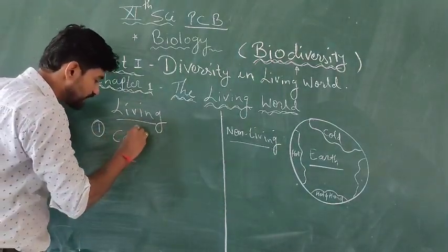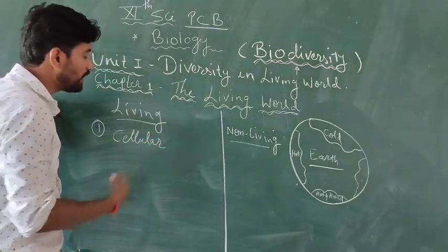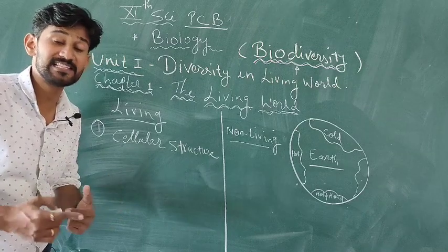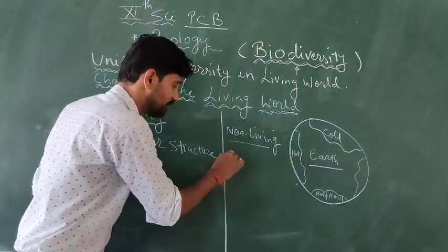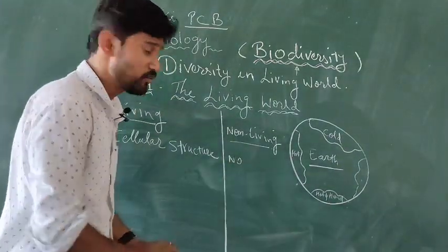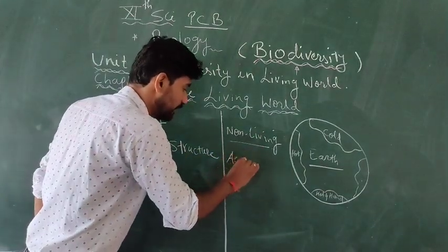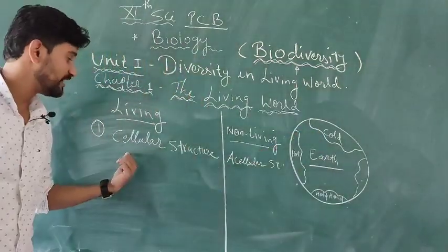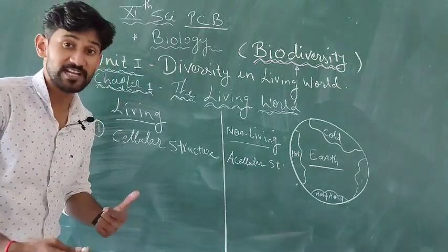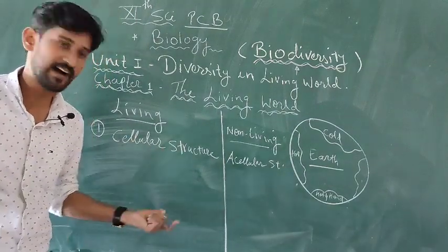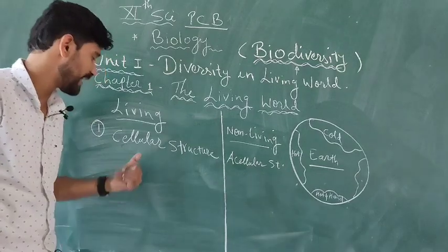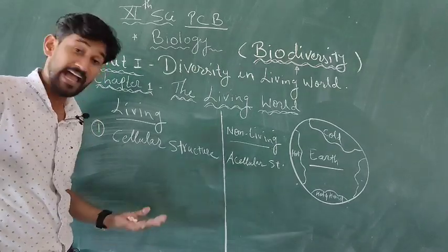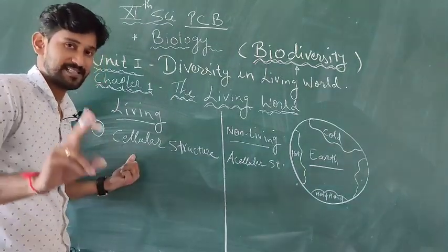The first definitive property is cellular structure. All living organisms basically consist of a cellular structure - every living organism has a cell. Non-living organisms have an acellular structure, meaning no cells are present. Living organisms have either prokaryotic cells or eukaryotic cells. In Kingdom Monera, like archaea bacteria and cyanobacteria, they have prokaryotic cells. In algae, fungi, Plantae, and Animalia, they consist of eukaryotic cells.